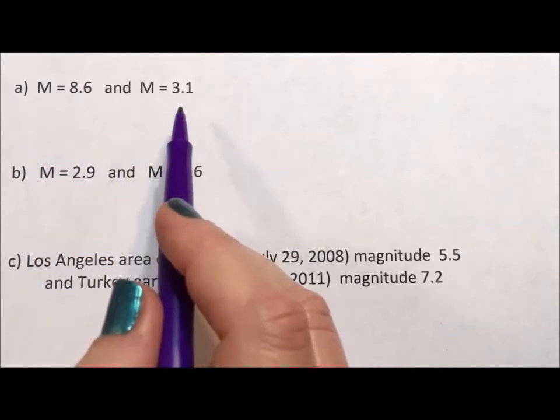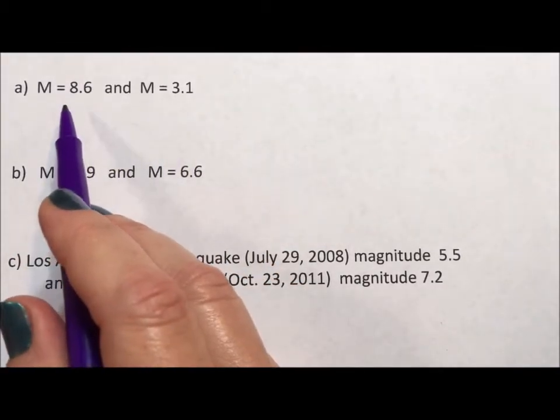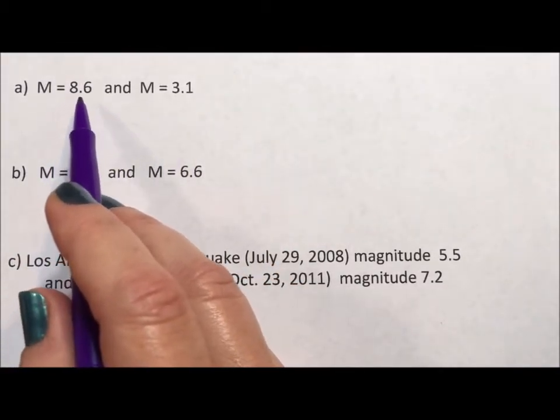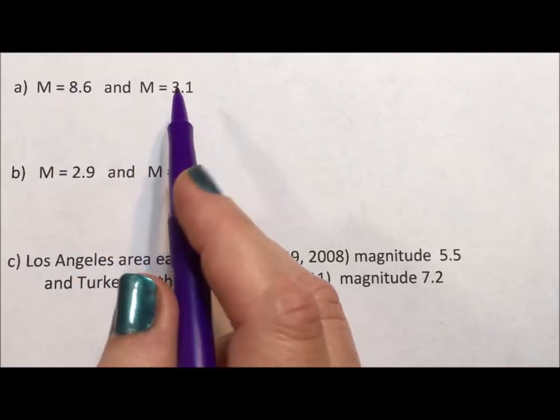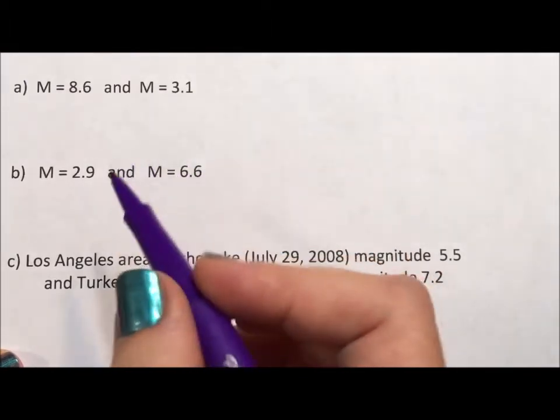And I want to compare a couple of earthquakes. So if we have an earthquake with a rating of 8.6 on the Richter scale versus one that's 3.1 on the Richter scale, and we want to know how they compare,